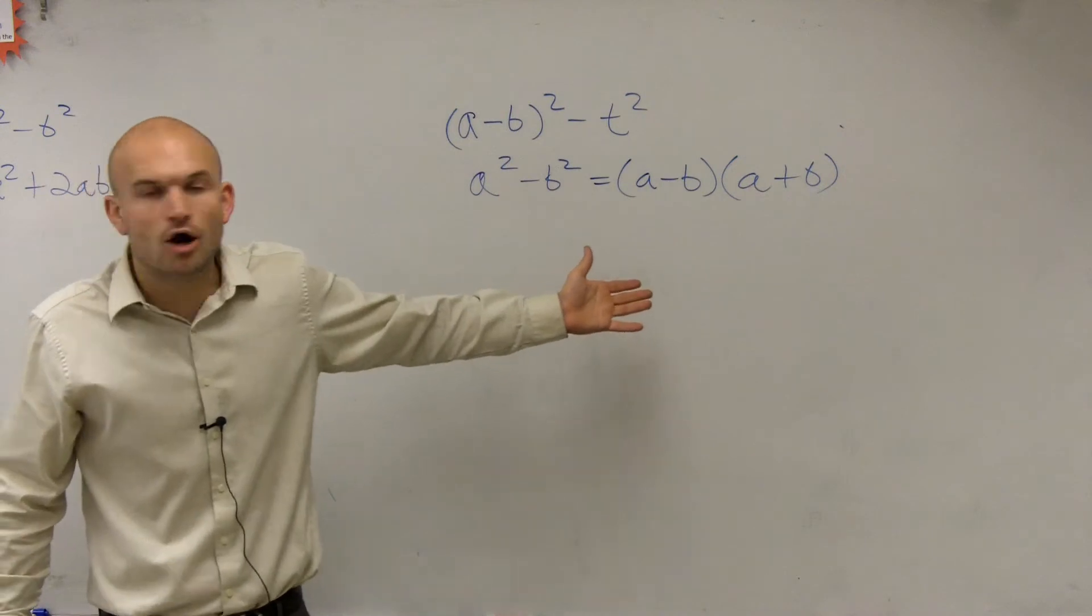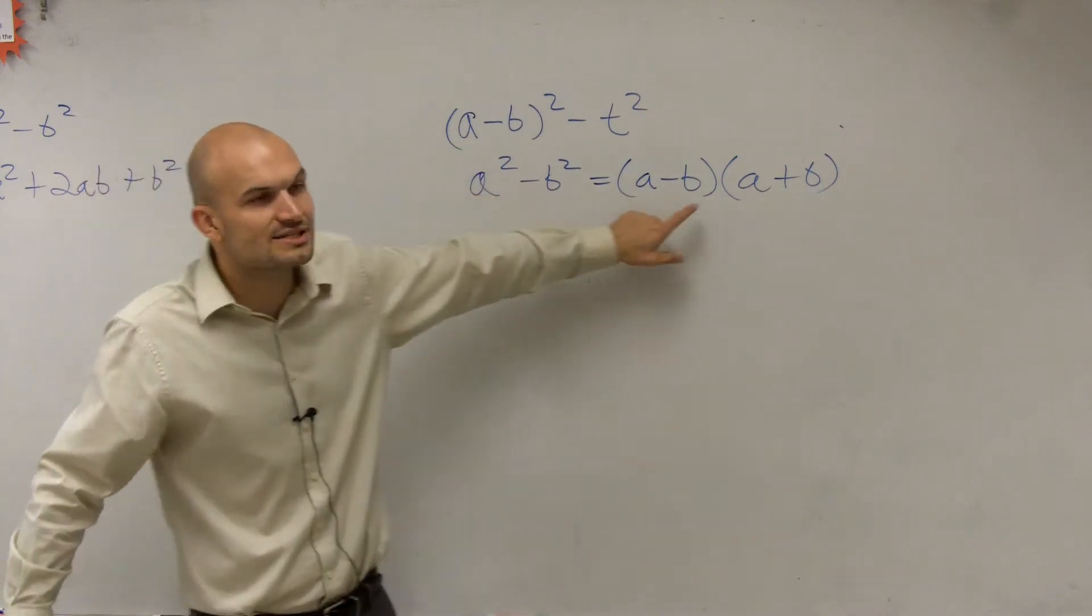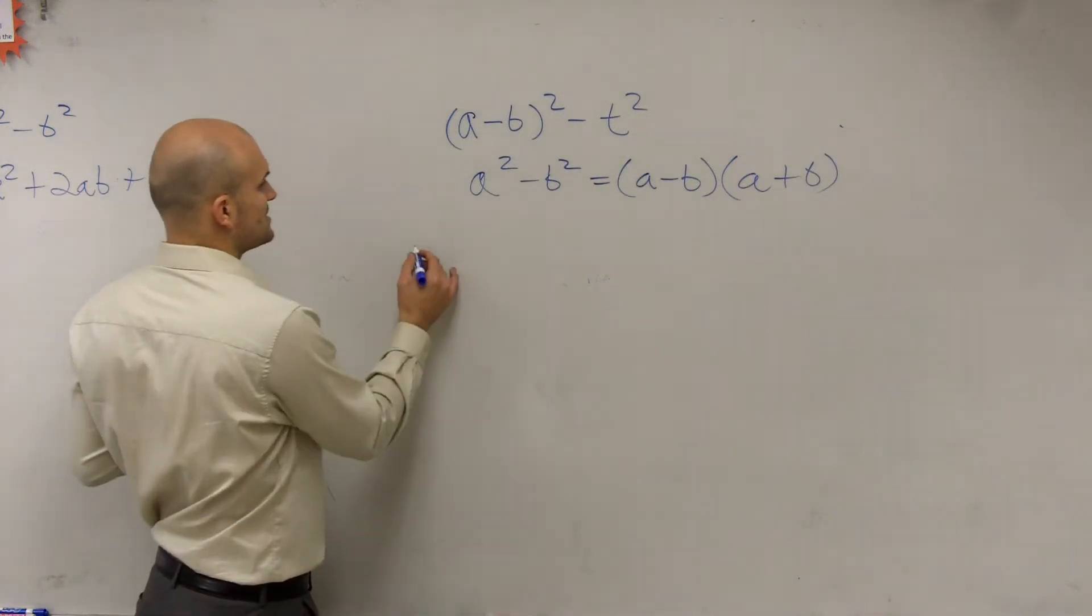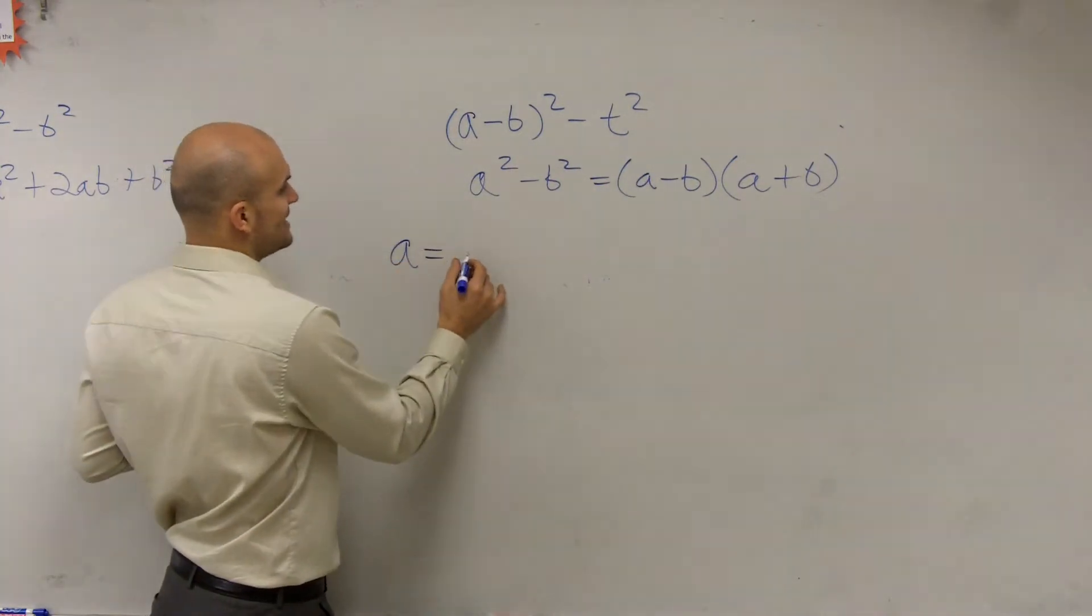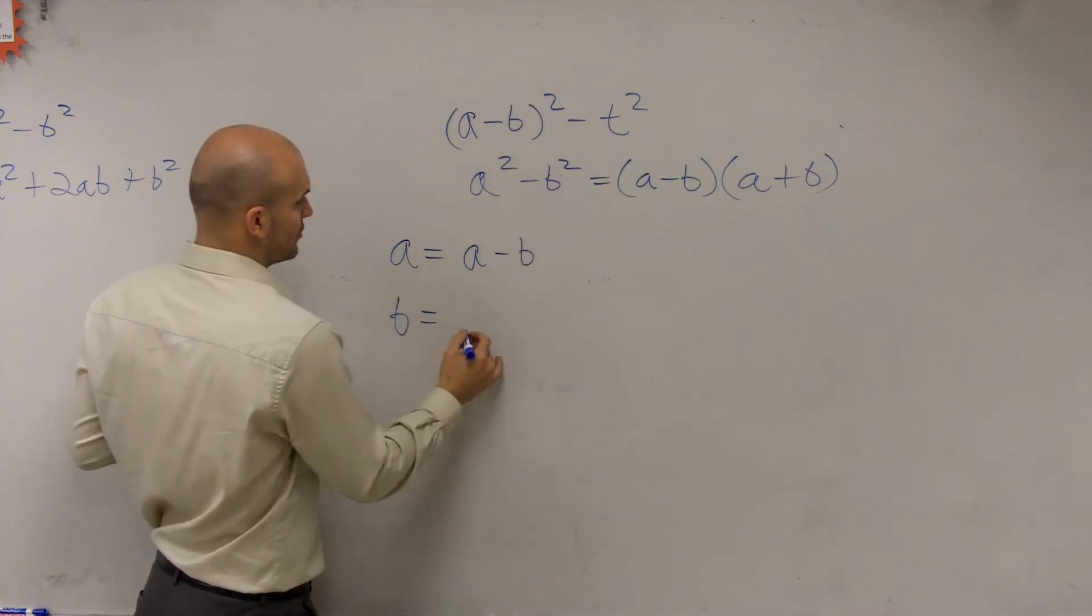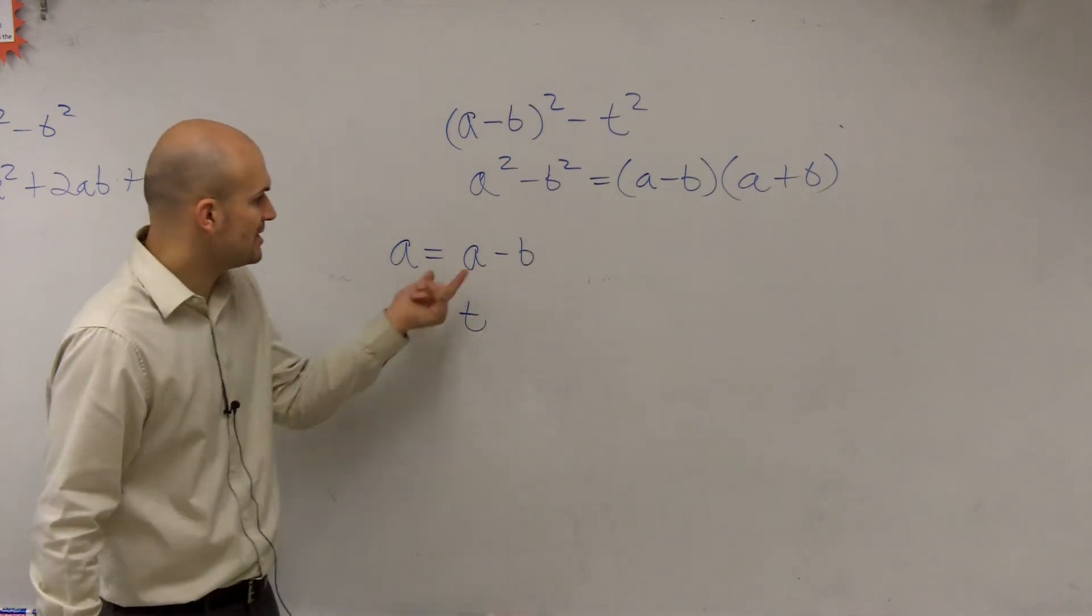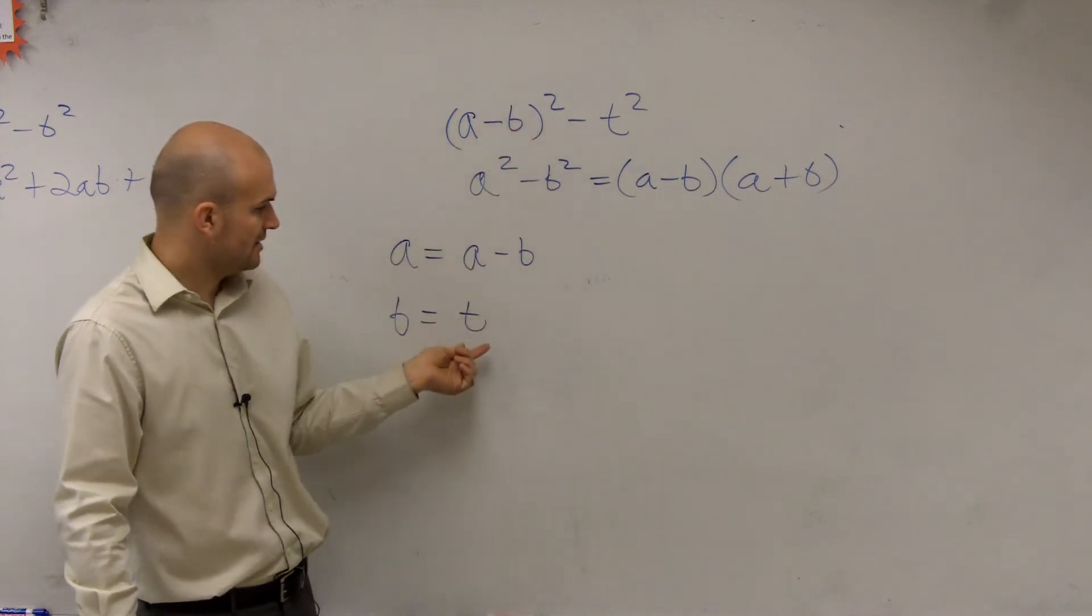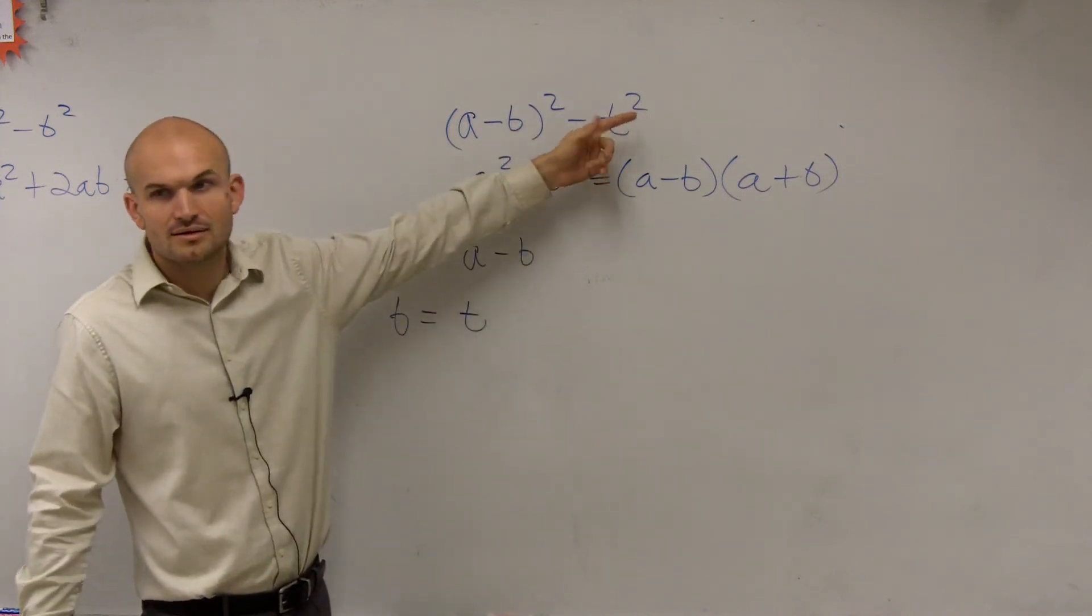All we need to do now is figure out what is going to be a and b. So we look at this and we say a then has to equal a minus b, and b has to equal t, because a minus b squared, is that that? Yeah. Is t squared my term there? Yeah.